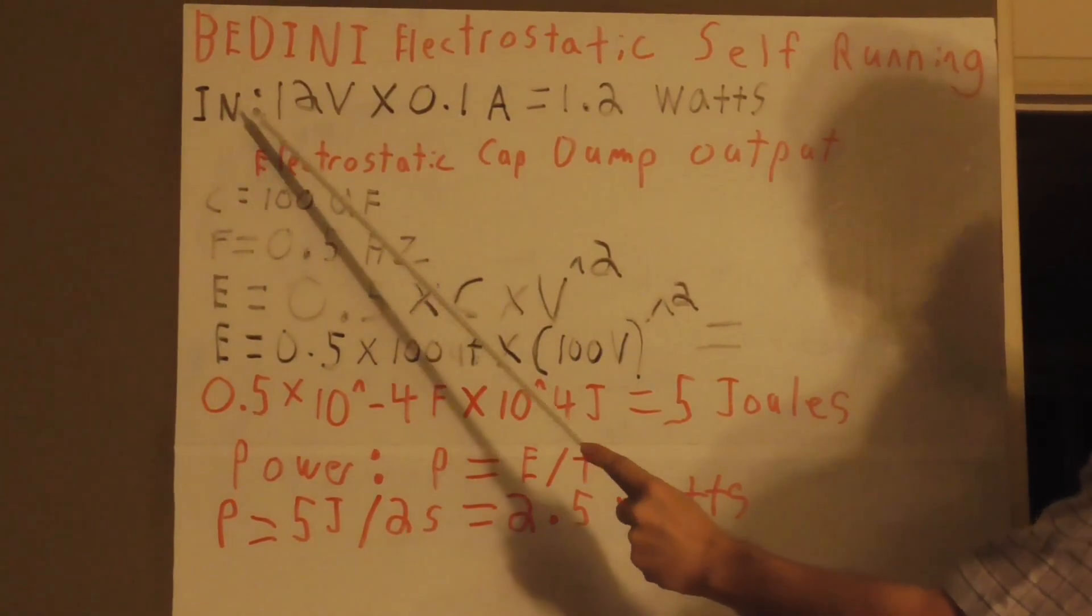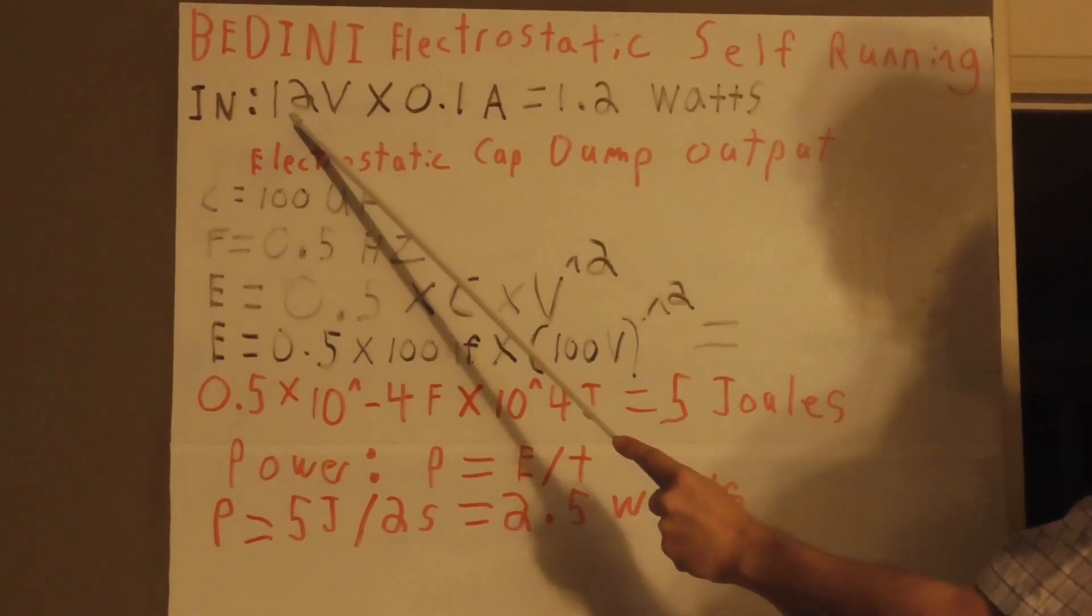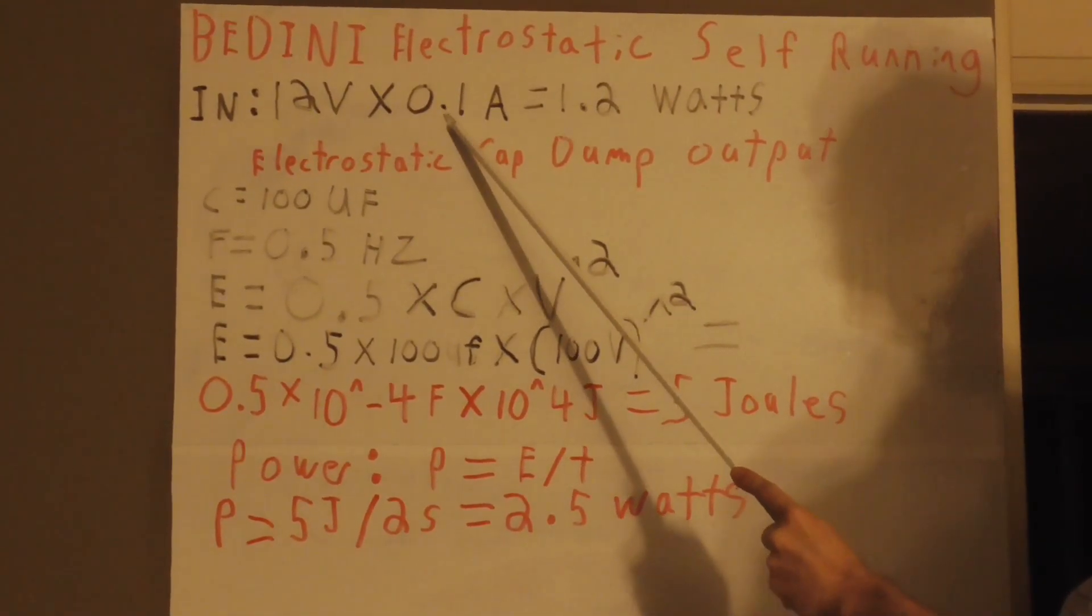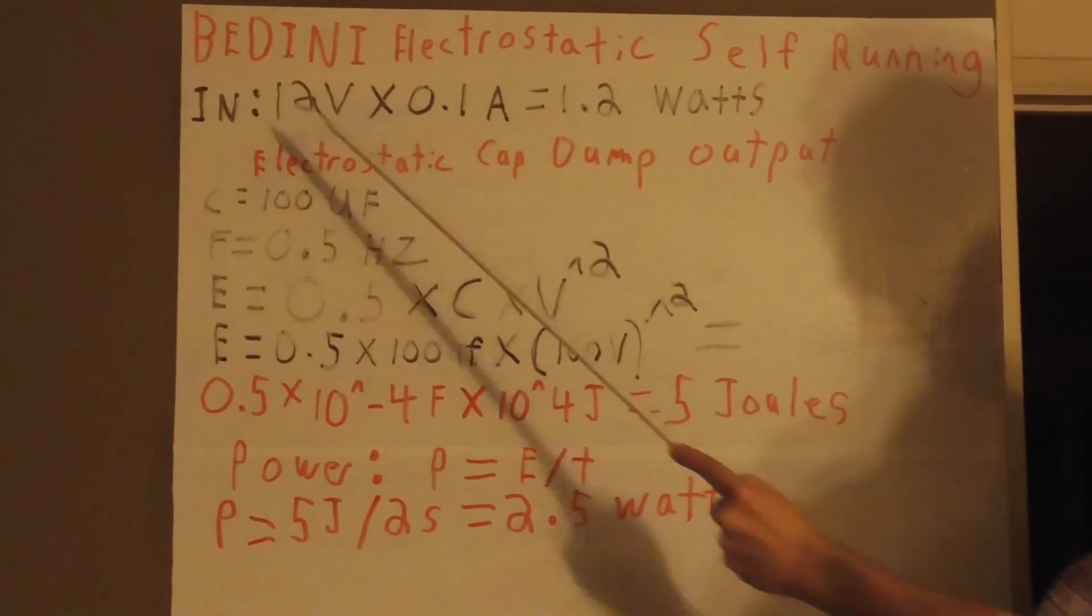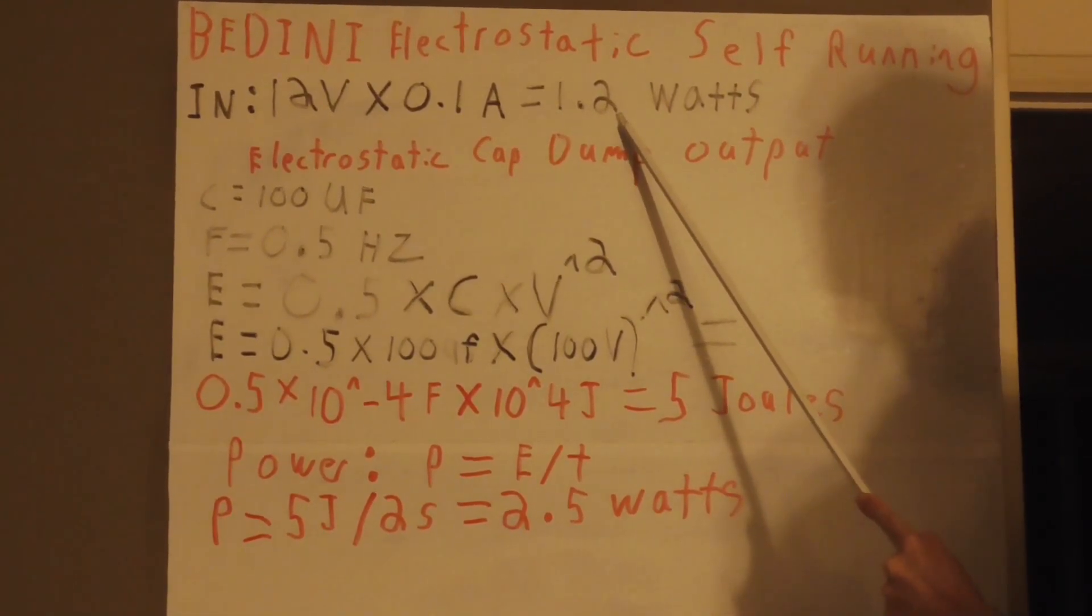So basically here's the input, so we're assuming 12 volts with a 100 milliamp input that equals 5 joules according to Ohm's law, 1.2 watts.